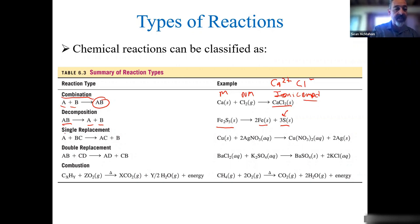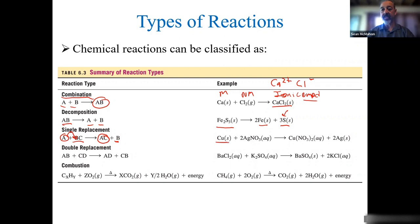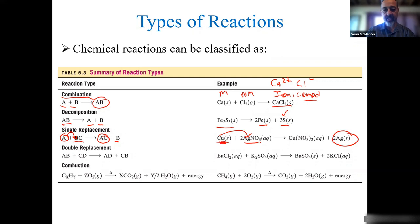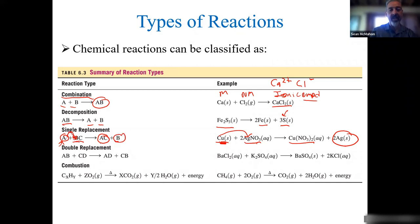Single replacement: that's where I have an element and a compound. One element kicks out the other element and forms a new compound and a new element. Copper is an element — it's a metal. Silver nitrate is an ionic compound. The copper comes in and kicks out the silver to form a new element, silver, and a new compound. Here I have silver nitrate; here I have copper(II) nitrate. That's single displacement. Think of it as: here's a single person, here's a couple — this person butts in and kicks someone out, and now there's a new couple.